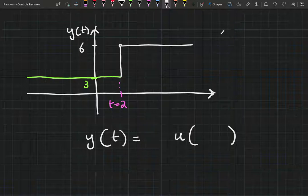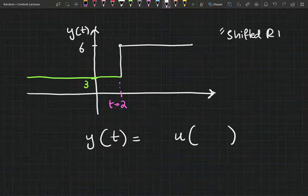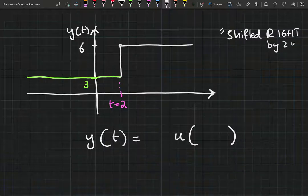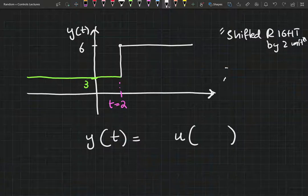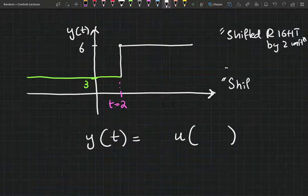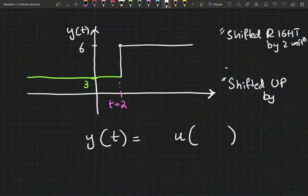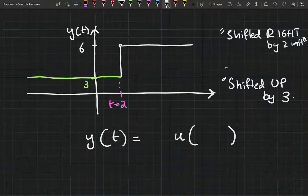It is a step response that is shifted right. It's not stepping up at zero. It's stepping up at plus two, by two units. And it is also shifted up by how many units? It's the initial value is not zero. The initial value is three. So it's shifted up by three units.